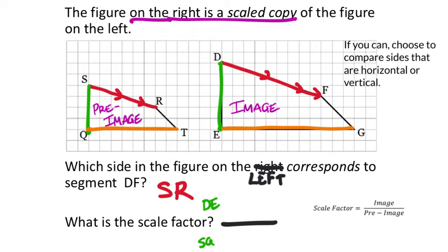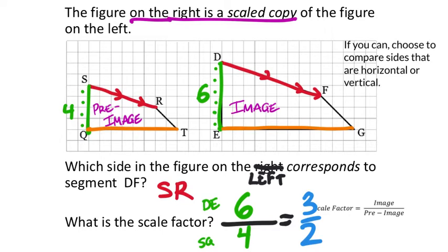SQ is the pre-image length, which means it goes into the denominator. Always look to simplify these fractions — doing six divided by four in the calculator with the N over D button simplifies to three over two. On the assignment, this is a multiple-choice question; look for three over two as a fraction on the pull-down menu.